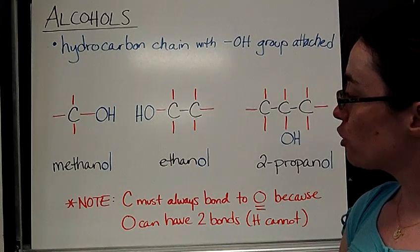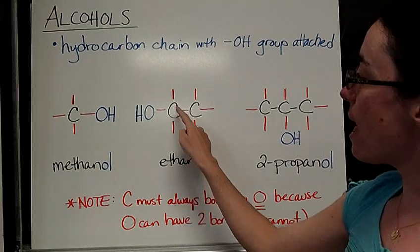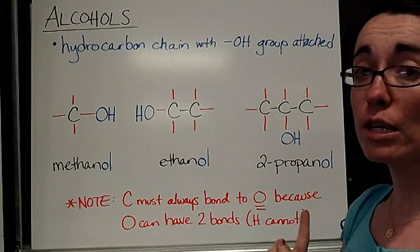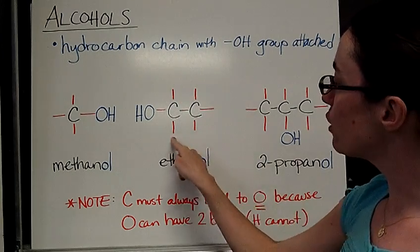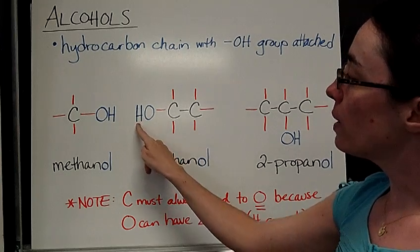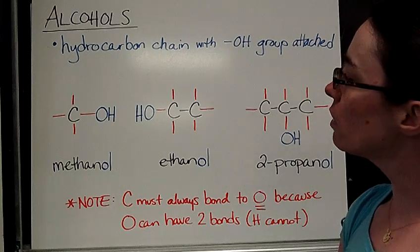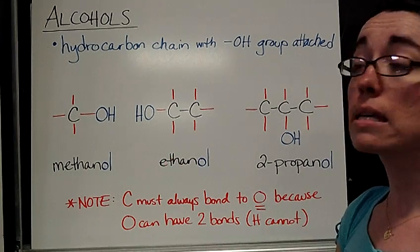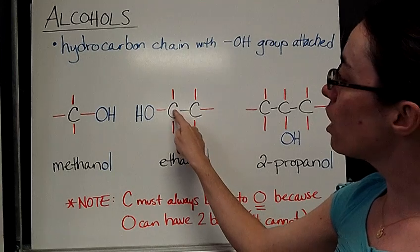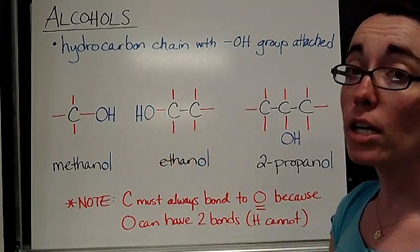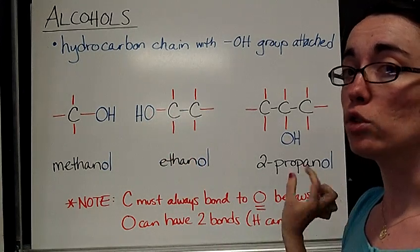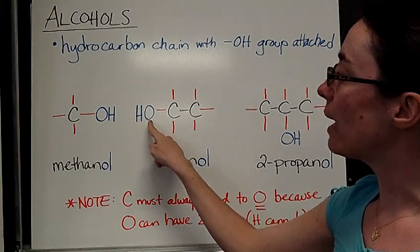We can move on to our next structure here. Ethane, two carbons single bonded together. Lots of hydrogens understood. Now we have an OH group that is hanging off of the first carbon. You'll notice I wrote it a little bit funny. Instead of saying OH, it looks like it says HO. And that's because the carbon must be attached to that oxygen. The oxygen can handle two bonds. The hydrogen cannot.